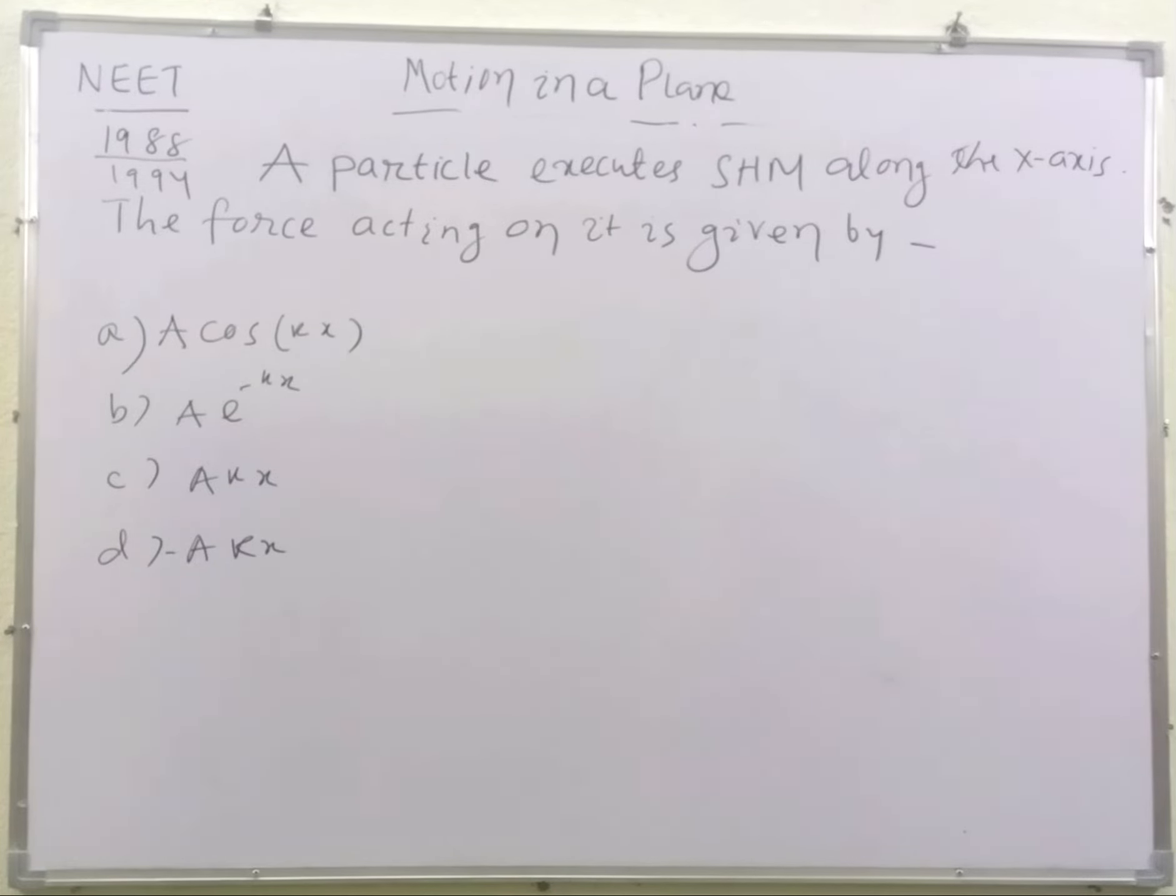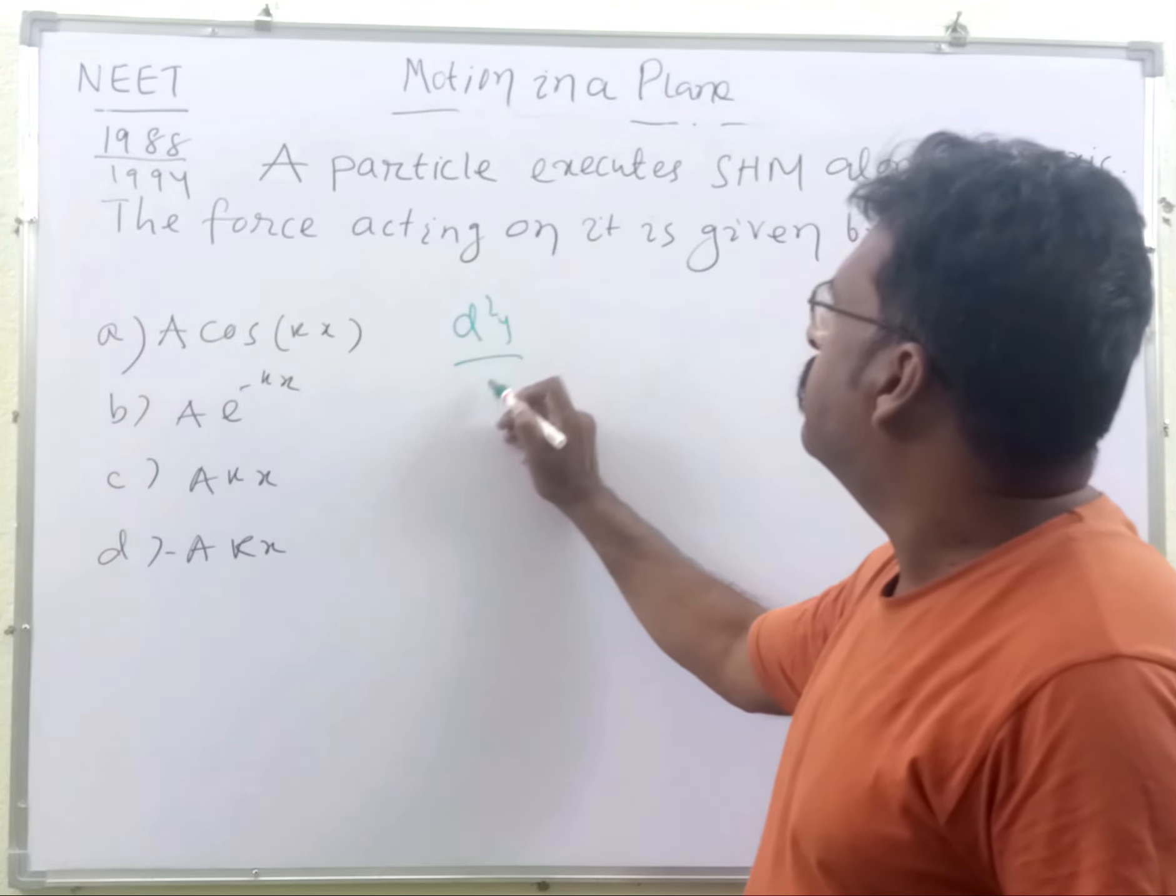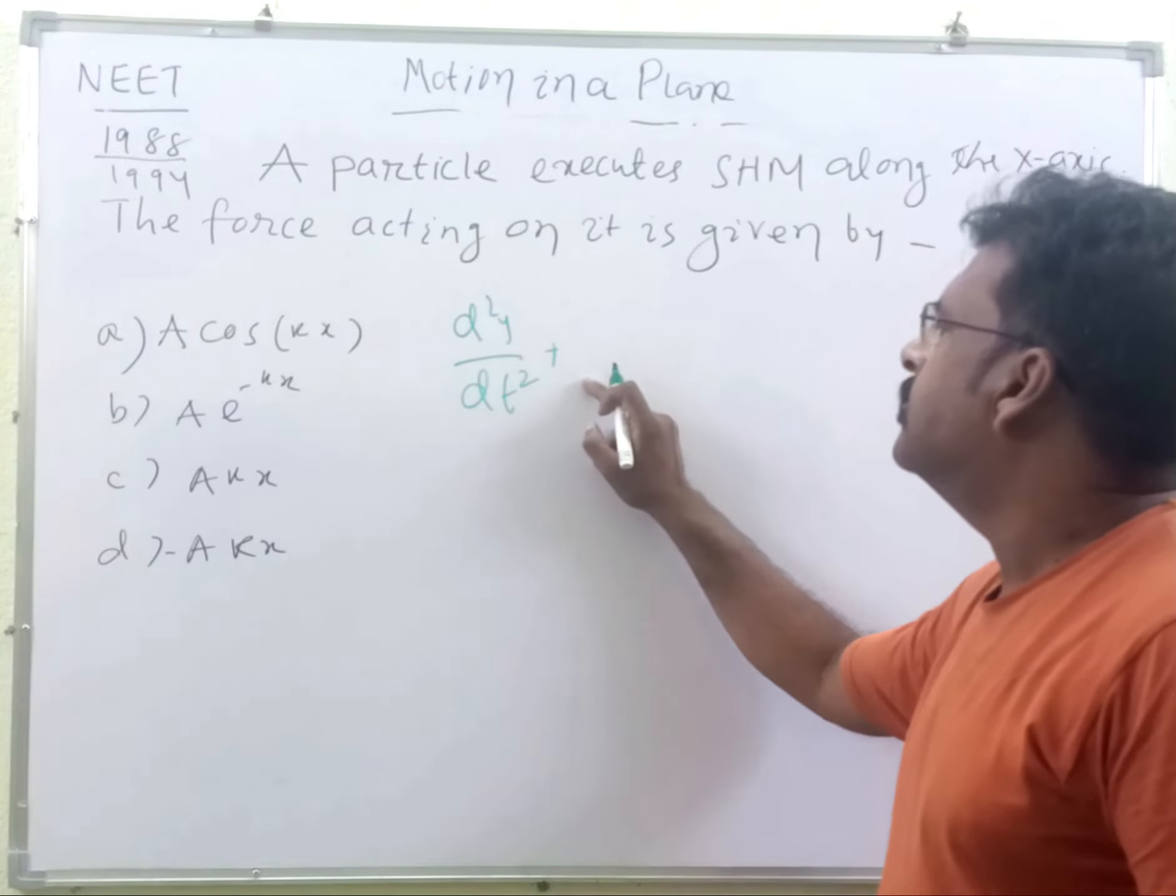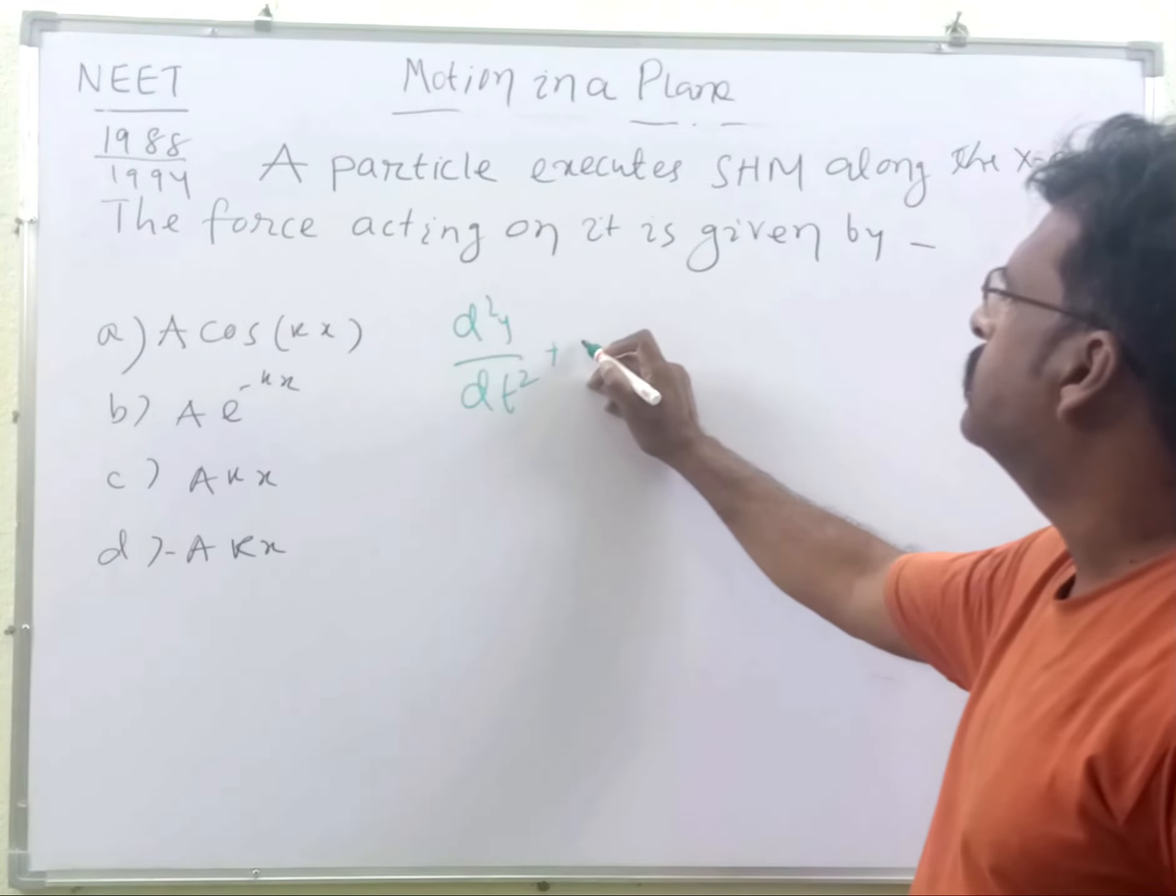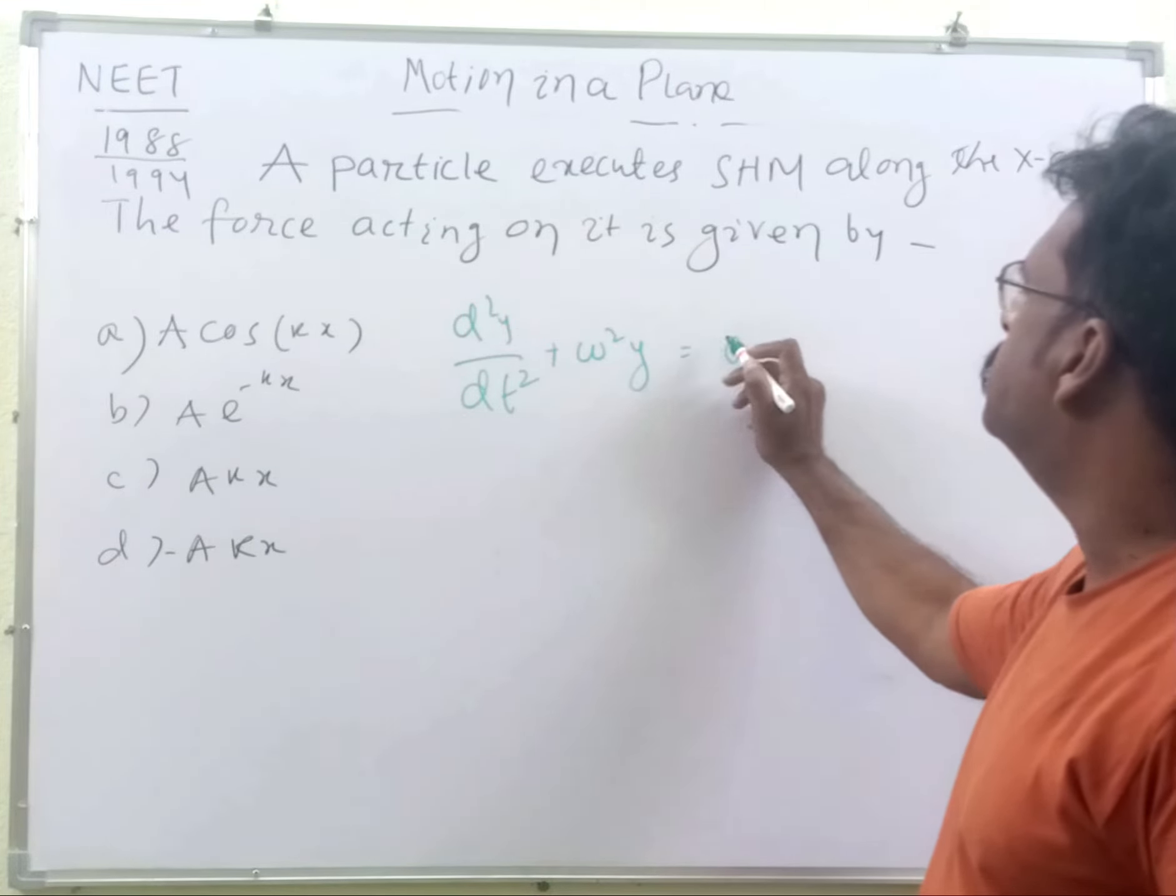Students, what is the equation of motion of simple harmonic motion? That is, d²y/dt² + ω²y = 0.